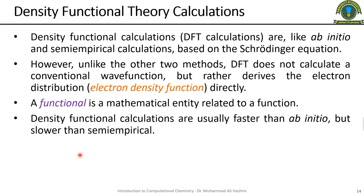Density functional theory, or DFT, is like ab initio and semi-empirical calculations in that it is based on the Schrödinger equation. However, unlike those two methods, DFT does not calculate a conventional wave function but rather derives the electron distribution — the electron density function — directly. DFT is more accurate than semi-empirical methods.